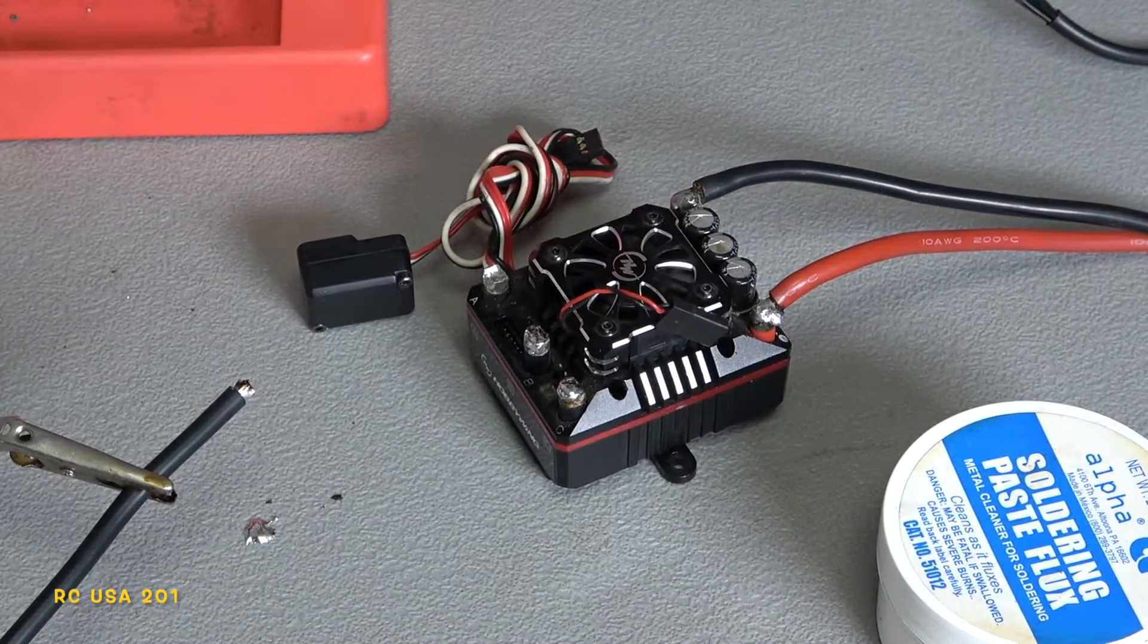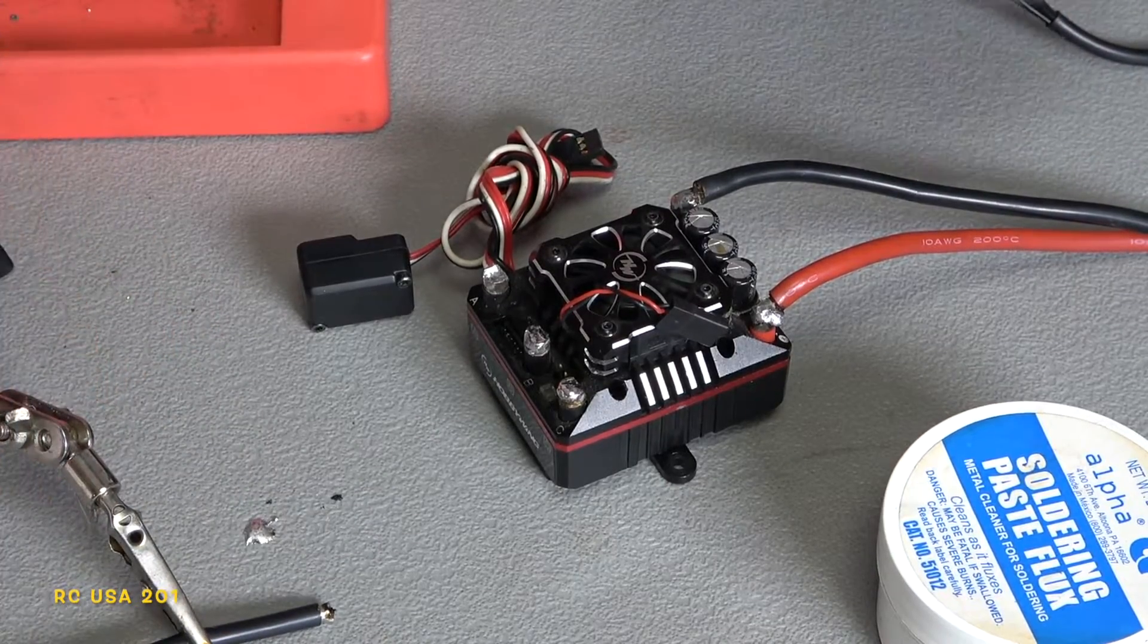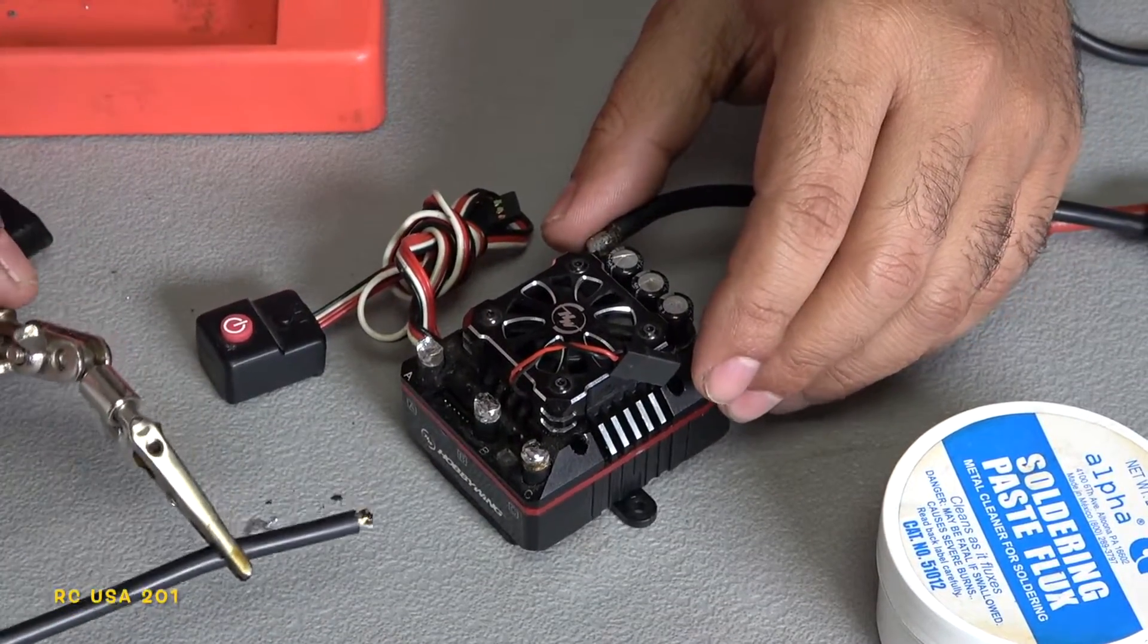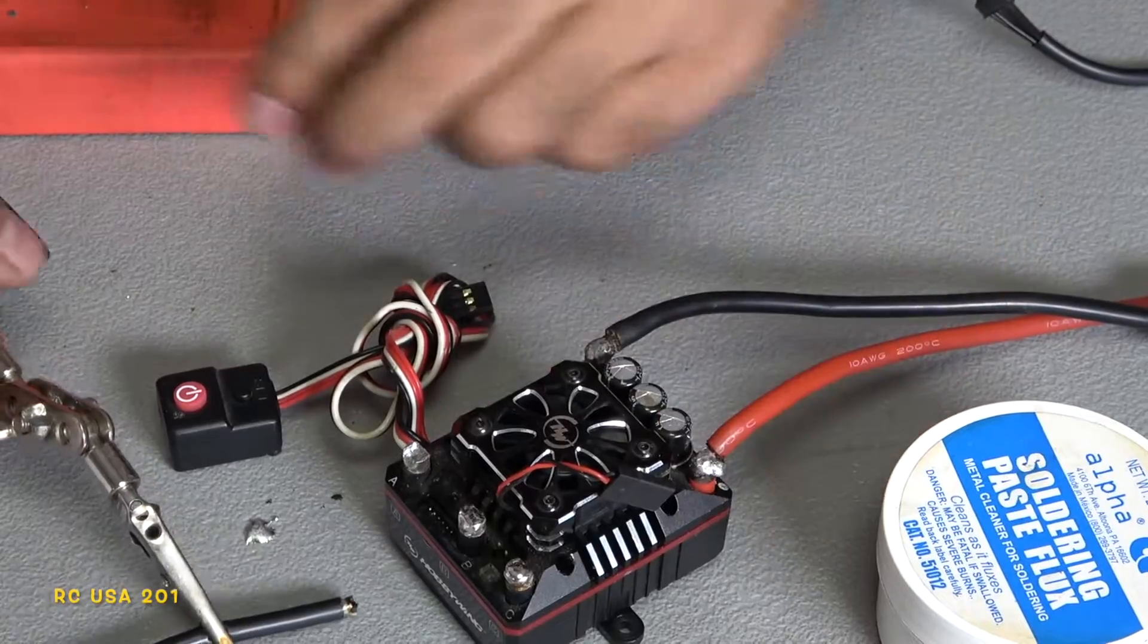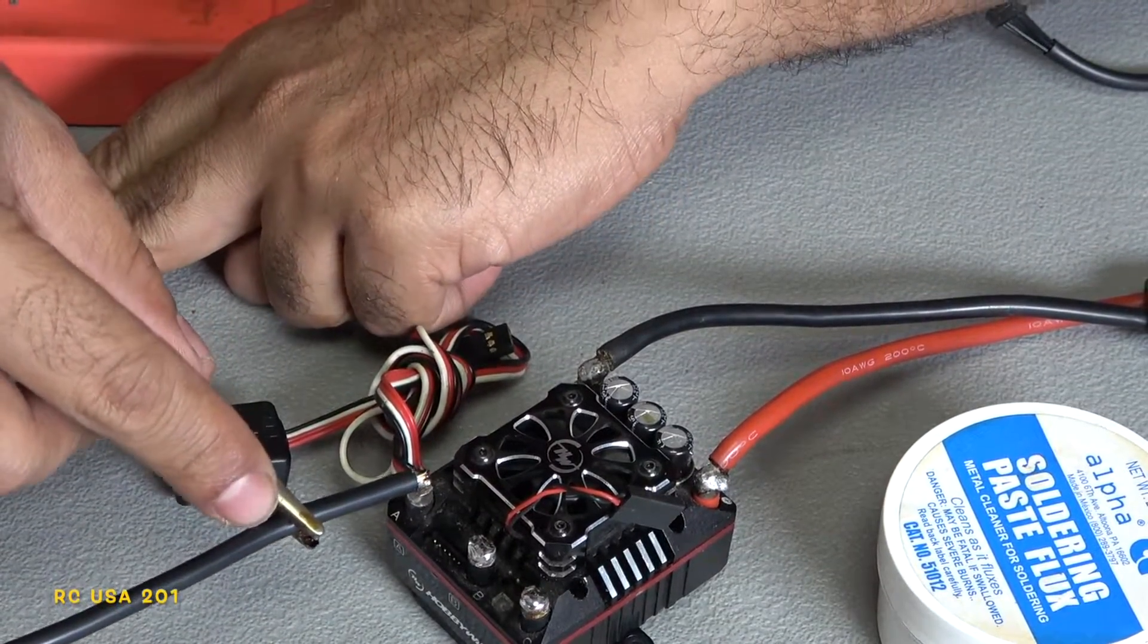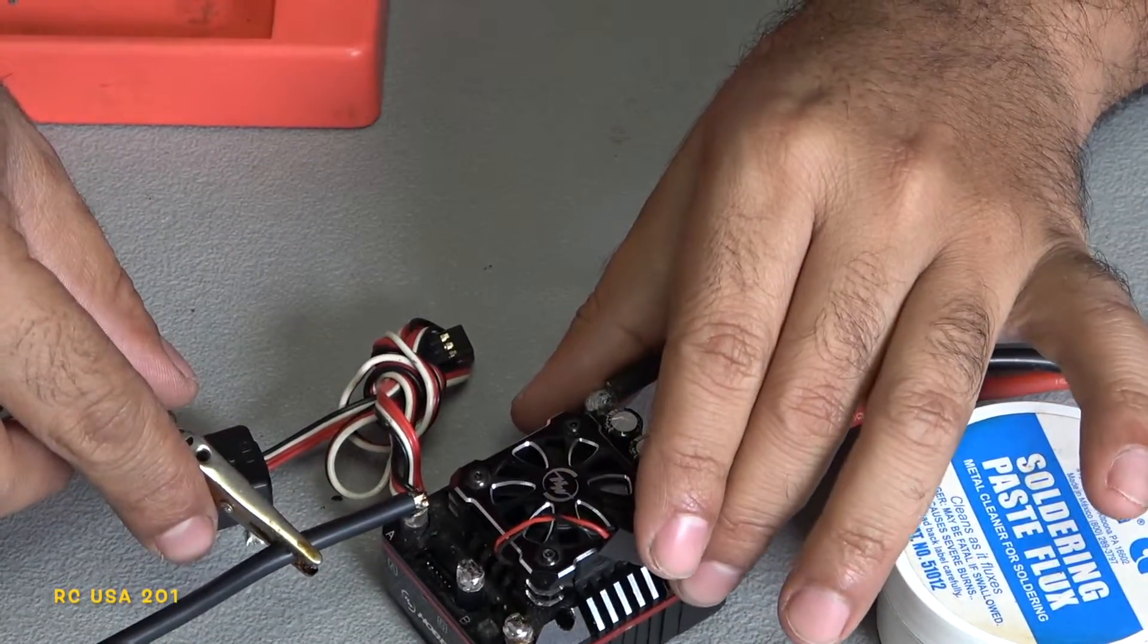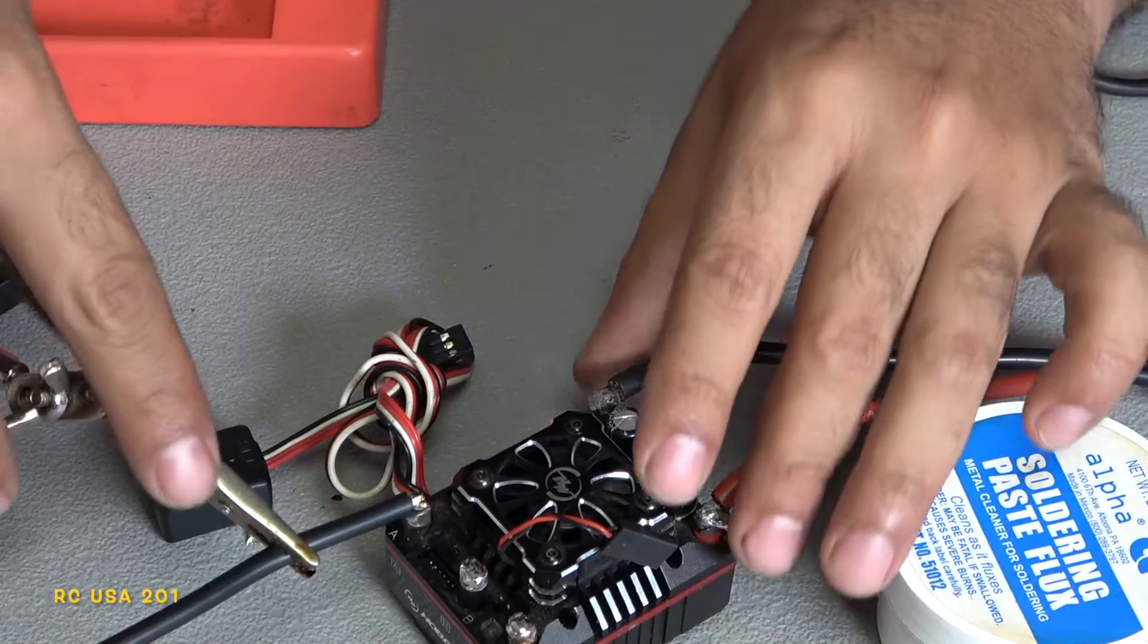Simple process from here - we're gonna start off from one end to the other end. What we're gonna do here is pretty much start right here. If you tin this thing up really good, you shouldn't have to put any more solder on it.